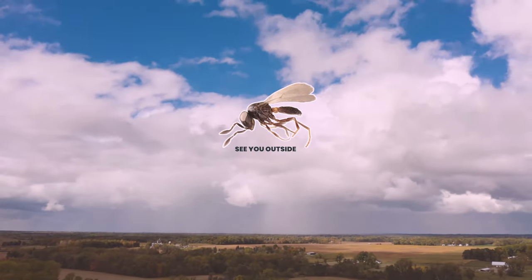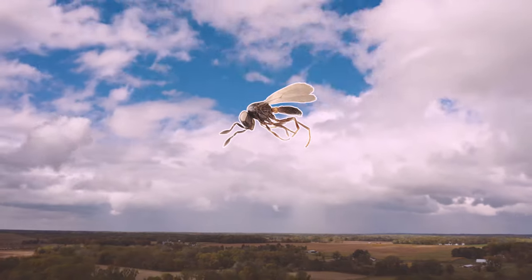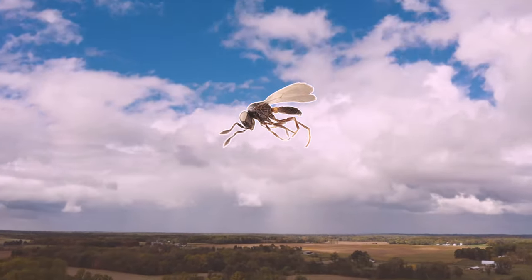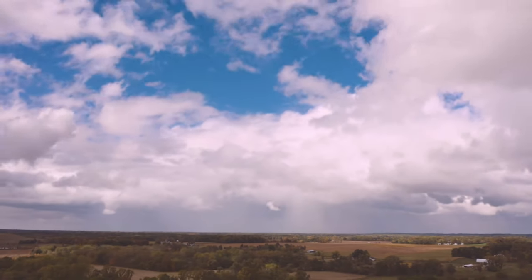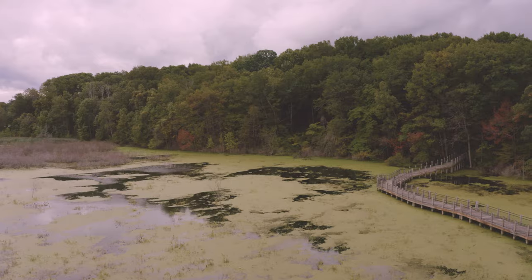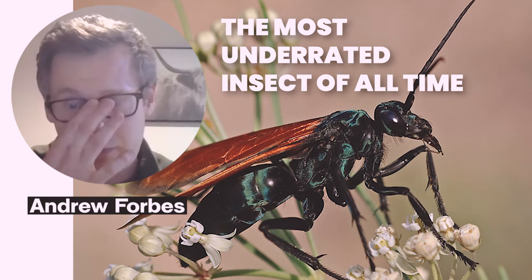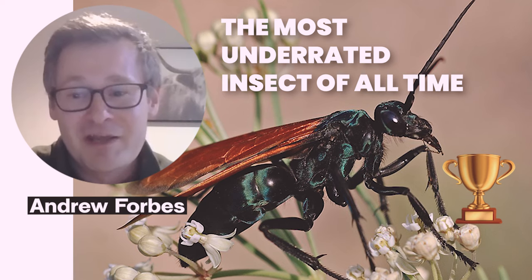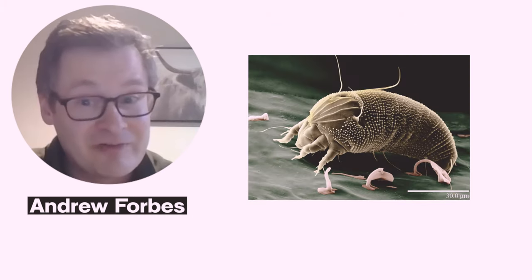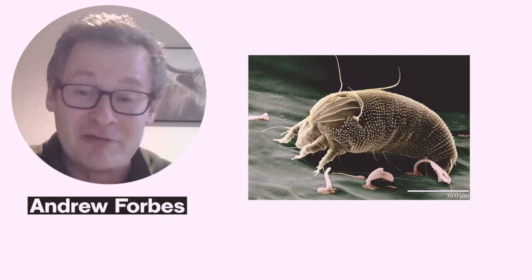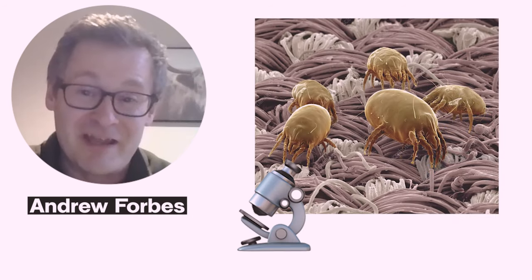Is there any other insect that compares to the sheer number and specialization of parasitoid wasps? Have we seen anything like this in the animal kingdom? The answer is that we don't know yet, because we also haven't studied lots of other small parasitic things. One response to Andrew's paper was: what about parasitic nematodes, mites, and things like that? They might also be highly host-specific and we just haven't really looked. In some of those groups we might have the same ultra-specialization and high level of diversity.